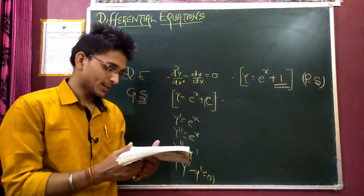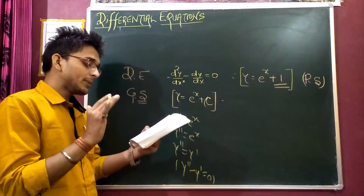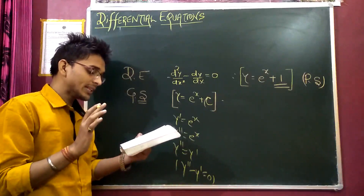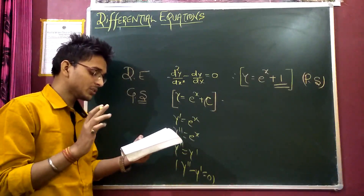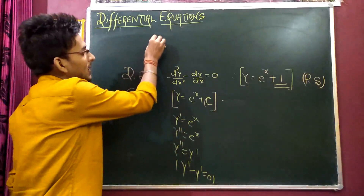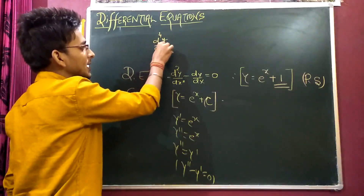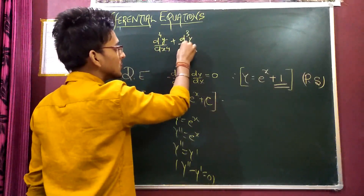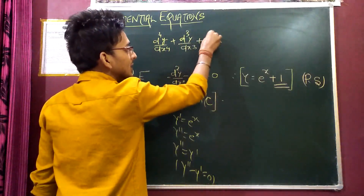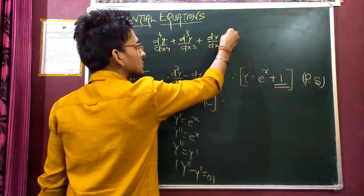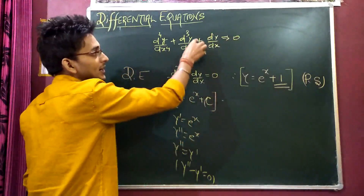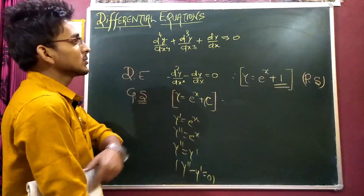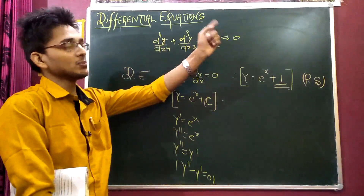Question 11: The number of arbitrary constants in the general solution of a differential equation of fourth order. If we have a 4th order differential equation — suppose it is d³y/dx³ plus 3a·dy/dx equals zero — I have shown that for a 4th order equation you must account for all orders: 4, 3, 2, 1.